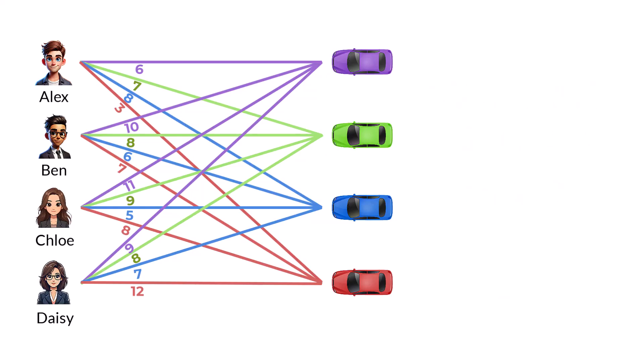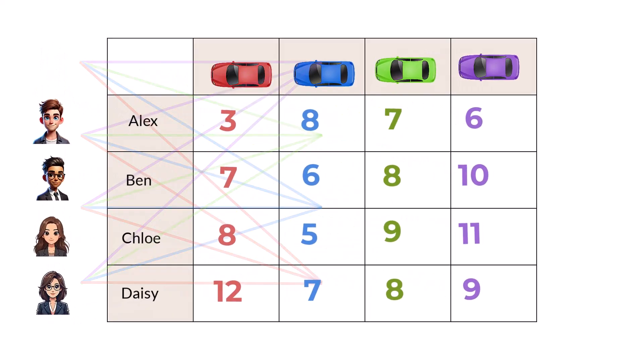Our diagram is very busy. So, we can transfer the information to a table. With the cars listed across the top, and the riders down the side.